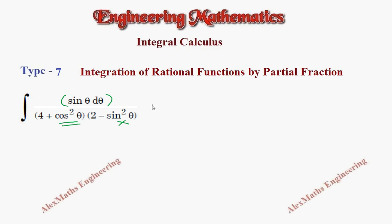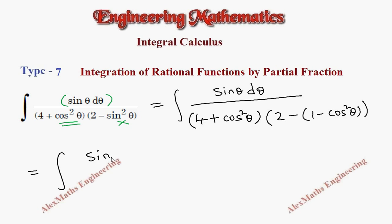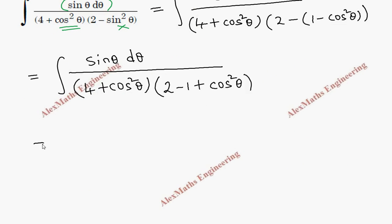We are going to replace sin² θ as 1 minus cos² θ. So the integration becomes: sin θ dθ divided by (4 + cos² θ) times (2 minus (1 minus cos² θ)). Taking the minus inside, the first term stays as is, giving minus 1 plus cos² θ inside the bracket.